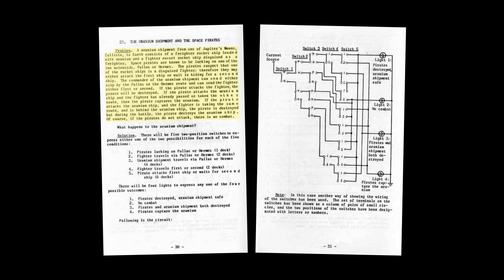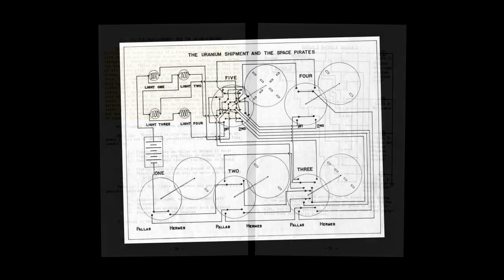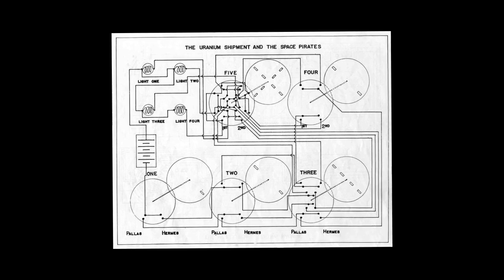The shipment consists of a freighter rocket ship loaded with uranium and a fighter escort rocket ship disguised as a freighter.